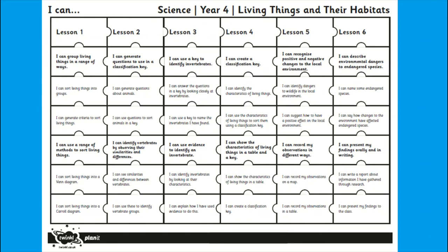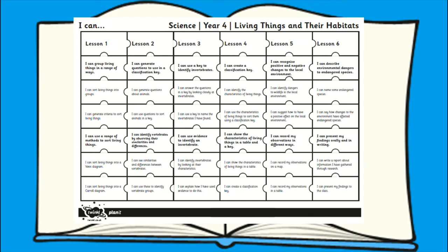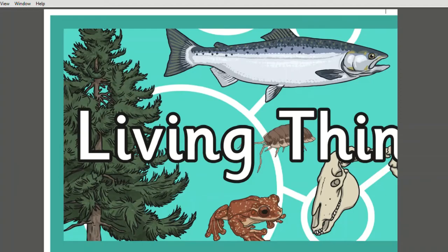This jigsaw target sheet can also be used, which lists the aims and success criteria for each lesson. These can be stuck in books at the beginning of a topic and coloured in before, during or even after the unit as a continuous assessment document to show your child's progression and achievements.